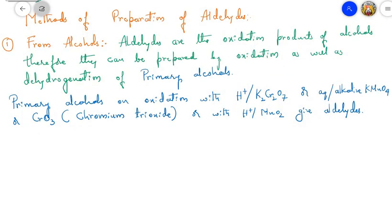Now we are going to learn methods of preparation of aldehydes. The first method is from alcohols. Aldehydes are the oxidation products of primary alcohols, so they can be prepared by oxidation or dehydrogenation. Oxidation means addition of oxygen; dehydrogenation means removal of hydrogen, which is also considered oxidation. Primary alcohols on oxidation with acidified K₂Cr₂O₇, aqueous alkaline KMnO₄, chromium trioxide, or acidified MnO₂ give aldehydes.